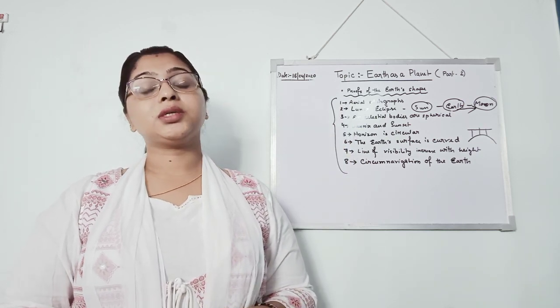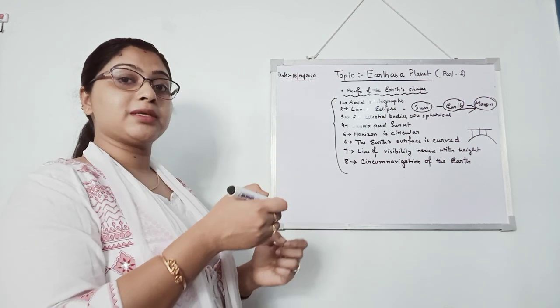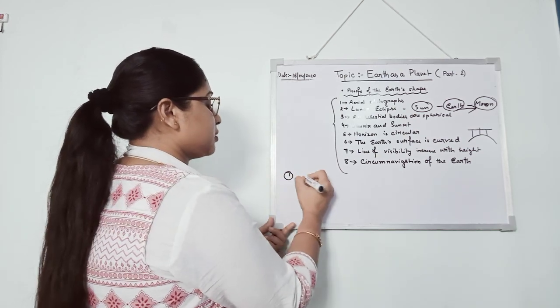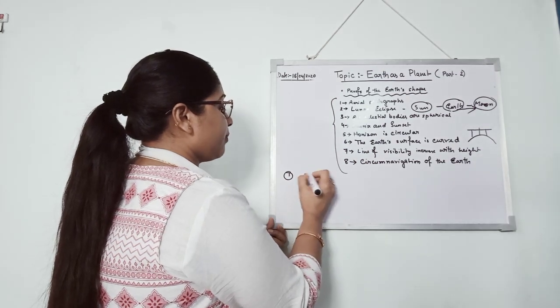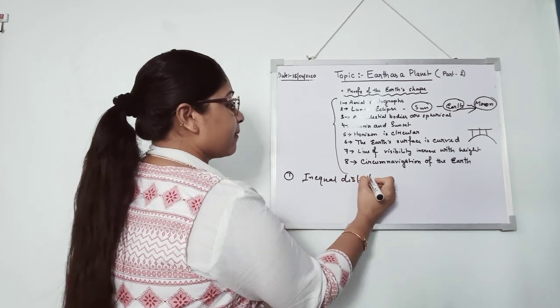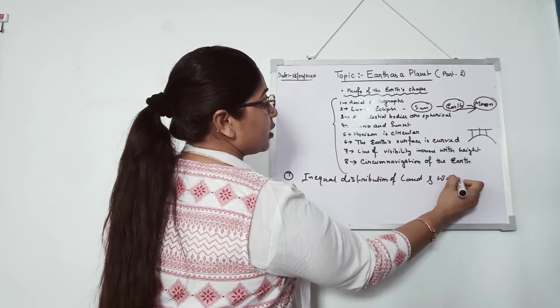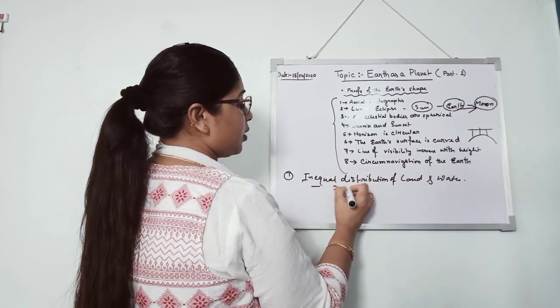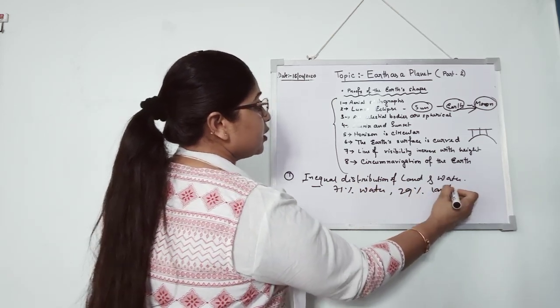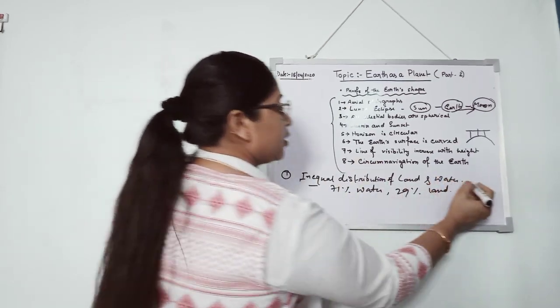Next, what are the conditions which supports life on Earth? Yes, I have explained some points in the previous video. But here, I will write some points first. The unequal distribution of land and water. You know, 71% is water covered and 29% is land covered. So it is not equally distributed in the Earth or in the world.